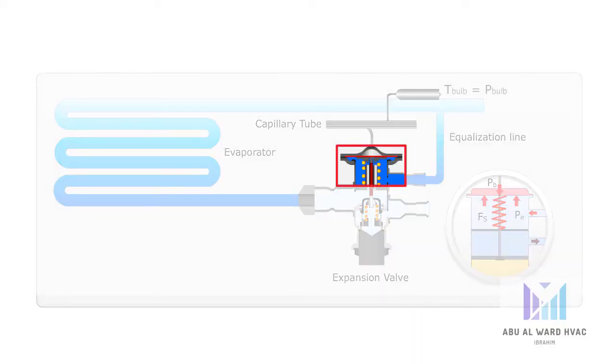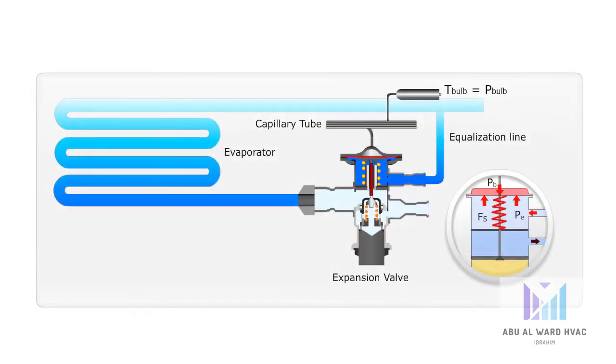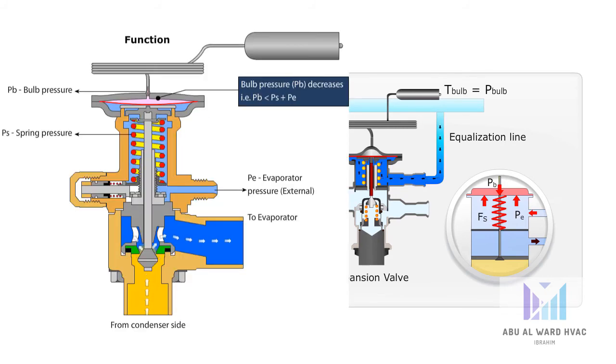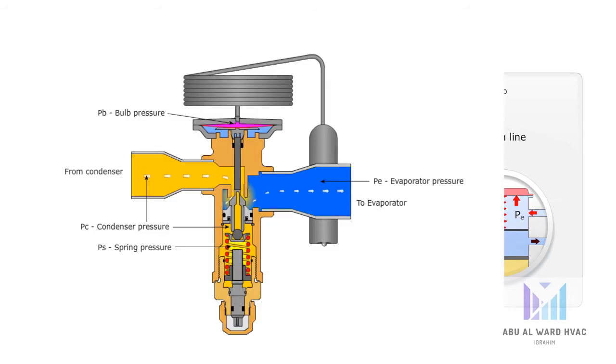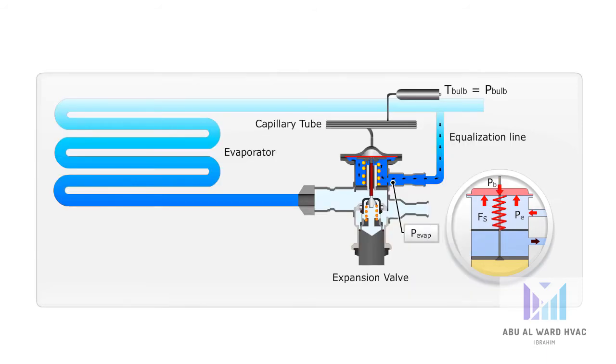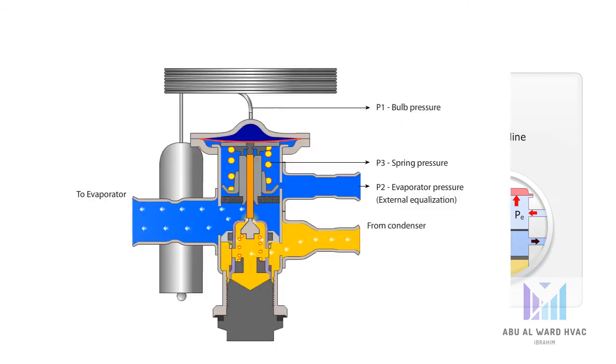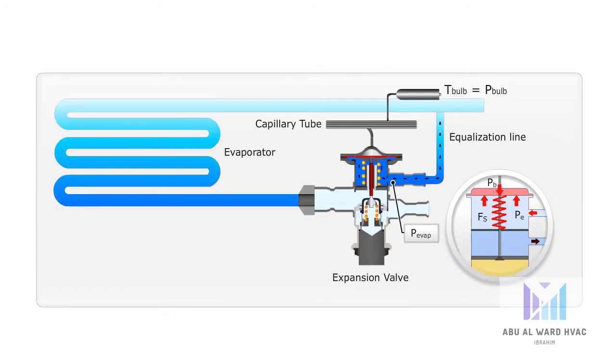The TXV senses the bulb temperature at the evaporator outlet. The bulb temperature is, by means of evaporating charge, converted into pressure P-bulb, which through the capillary tube is transferred to the top side of the diaphragm. The evaporating pressure Pe valve is led to the underside of the diaphragm, either through the external equalizing connector or through a hole inside the valve.